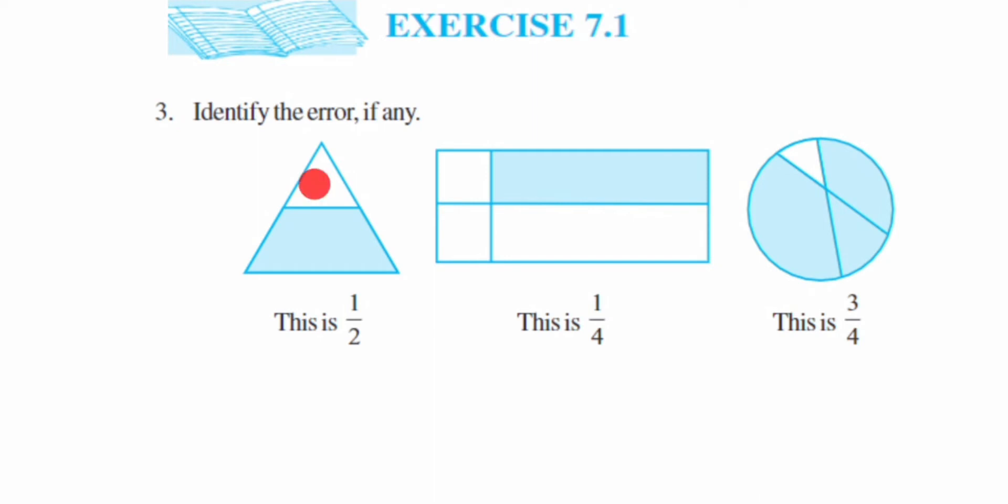It's a triangle. They have divided the triangle into two parts and also given the fraction as 1 upon 2. If you observe, the parts are not equal. Whenever you're writing a fraction, the parts have to be equal.